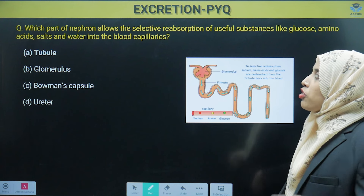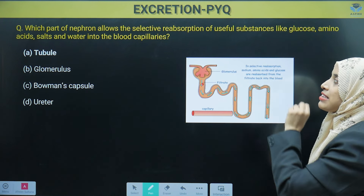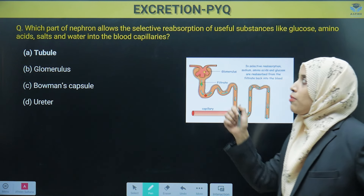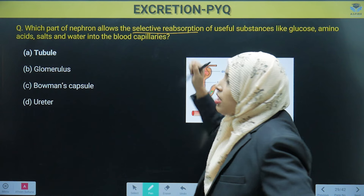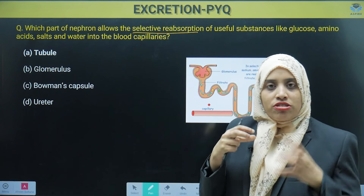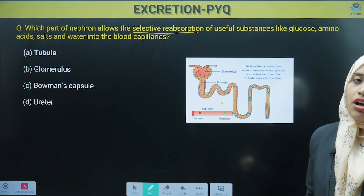Next question: which part of the nephron allows selective reabsorption? That means, first selecting useful things and then reabsorbing them.